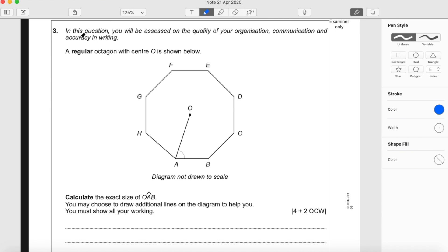Question 3. In this question you will be assessed on the quality of your organisation, communication and accuracy in writing. A regular octagon with centre O is shown below. Calculate the exact size of angle OAB. Remember, with a three letter angle notation, the middle letter is the angle we are interested in. So OAB - A is the angle we are interested in. You may choose to draw additional lines on the diagram to help you. You must show all your working.